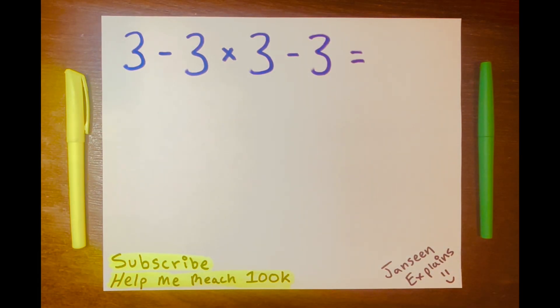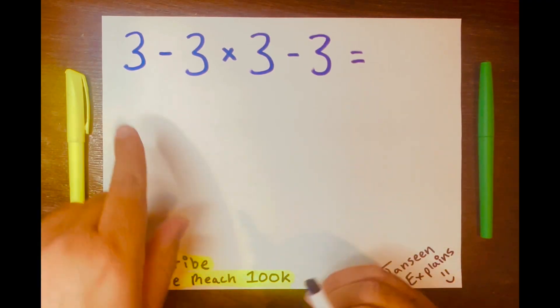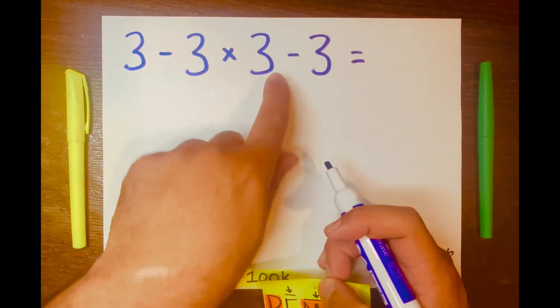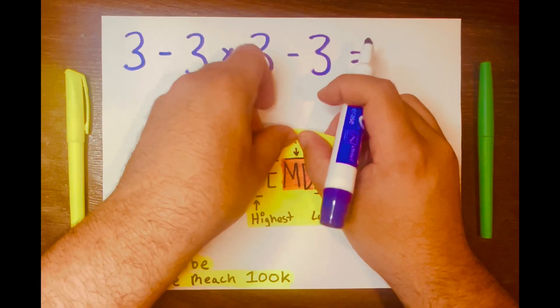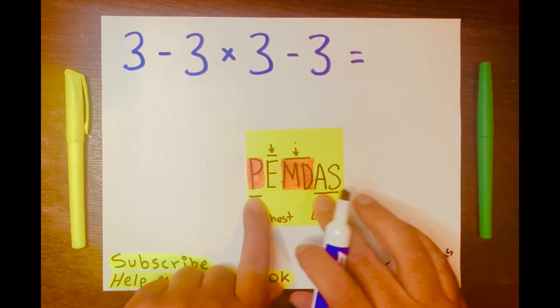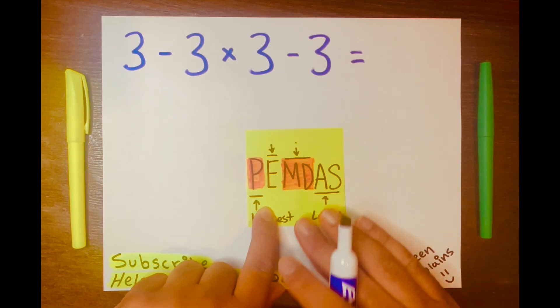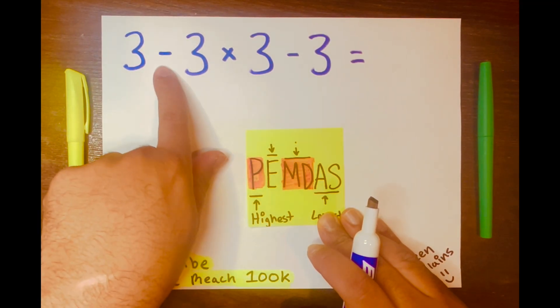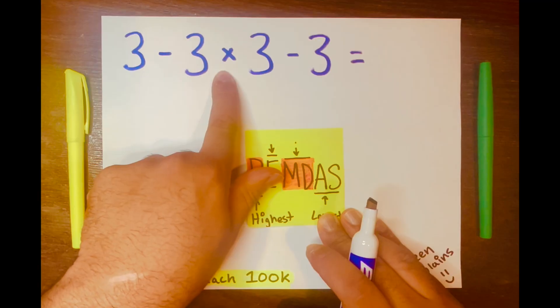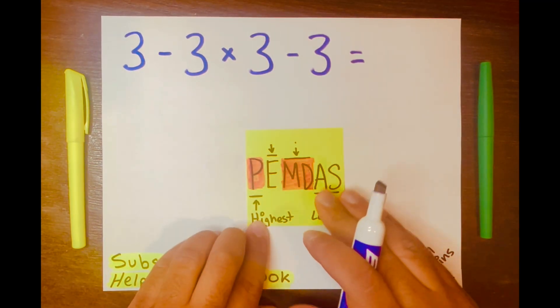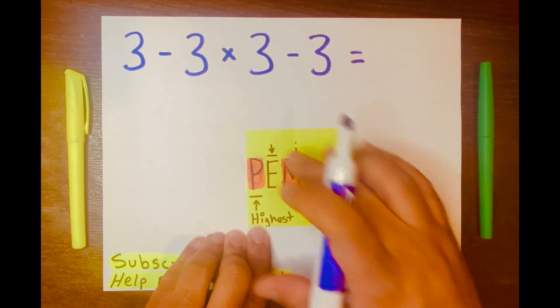So the right way to solve this math problem, when you see this math problem with these different operations, you need to think of PEMDAS. PEMDAS is just an acronym that will help us remember the order of operations. We're looking at subtraction and multiplication and subtraction, so we need PEMDAS to help us solve this math problem.